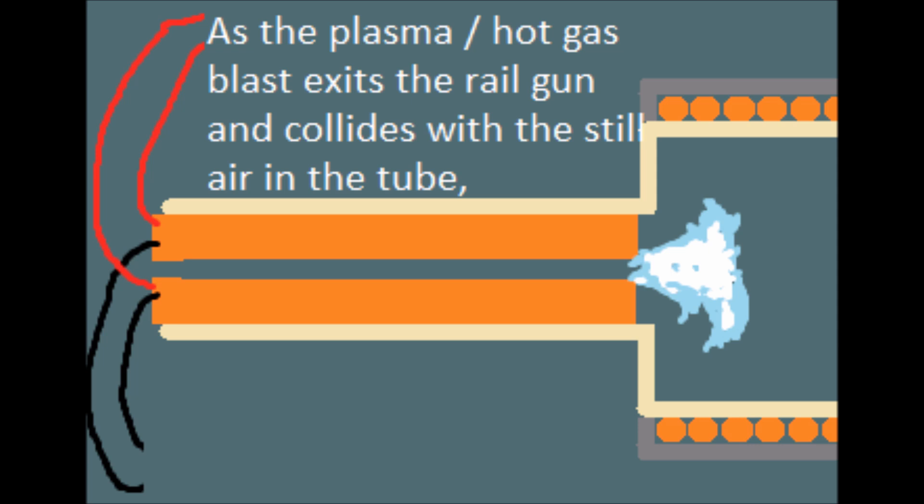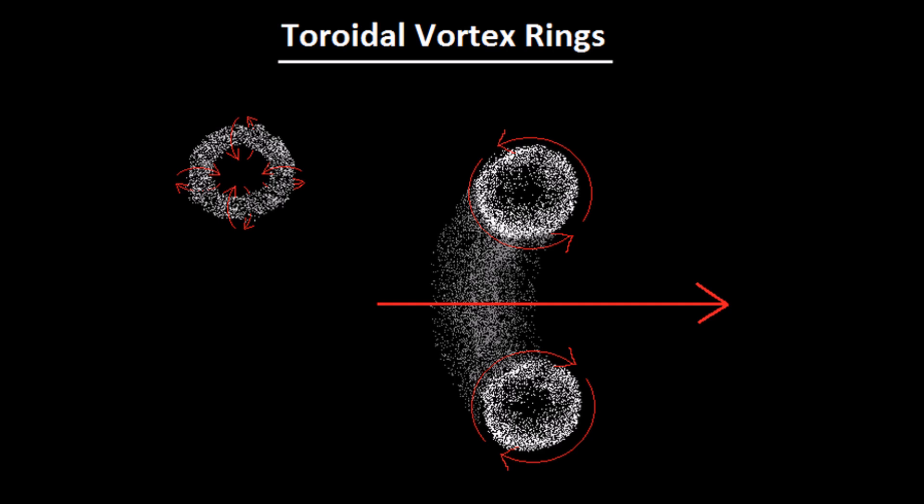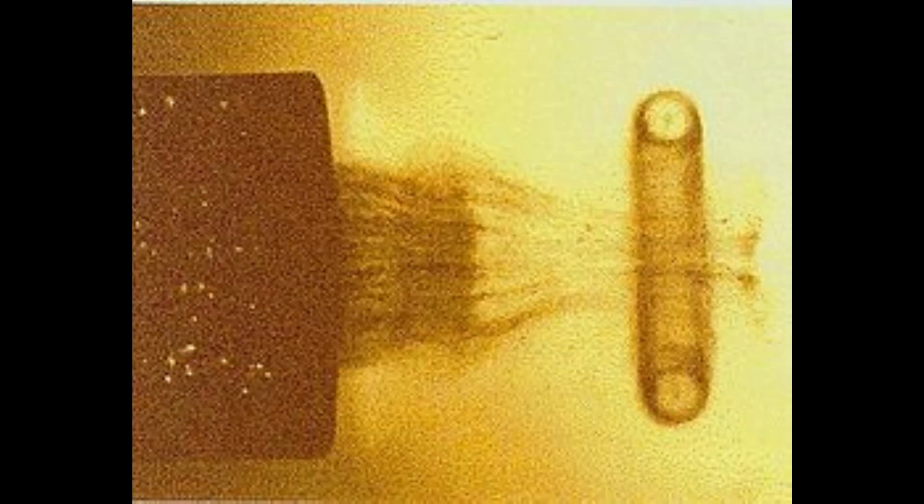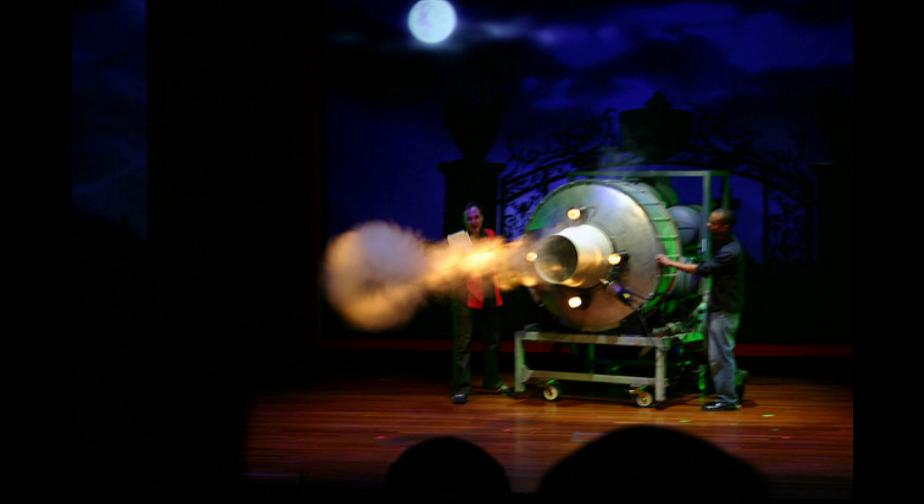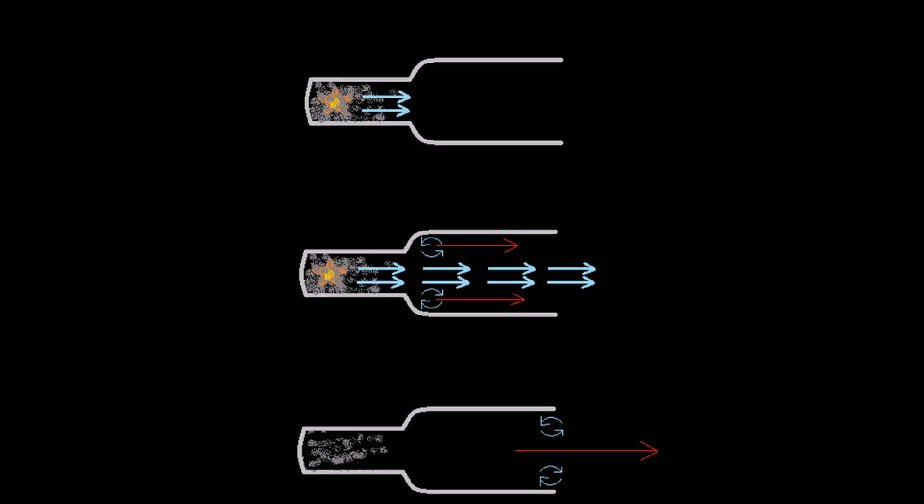As it exits the end of the rail gun section, aerodynamic forces cause it to expand and form into a toroidal vortex ring of plasma. This is a drawing that I made to show you what a toroidal vortex ring looks like. It's just a donut-shaped ring of spinning gas.